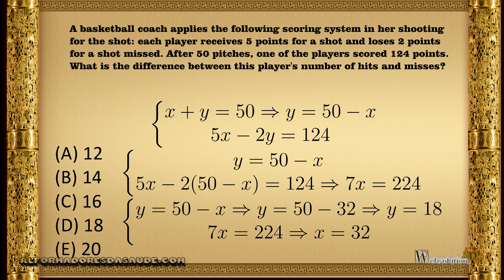In the other equation we have 5x, which is how many points you get, minus 2y, which is the points you lost, and we know that after 50 shots we have 124 points. After setting up the two equations,